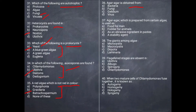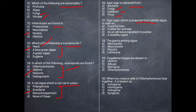Agar is obtained from certain algae, not from fungi or viruses. It is prepared from certain algae and is used as a stability agent.